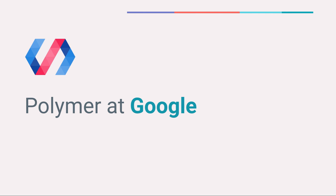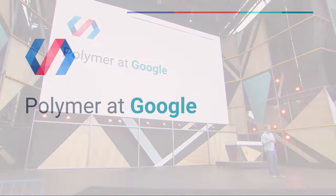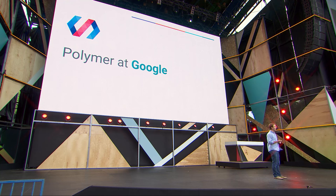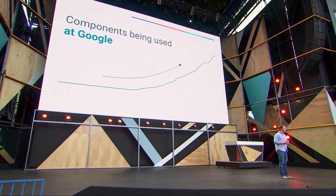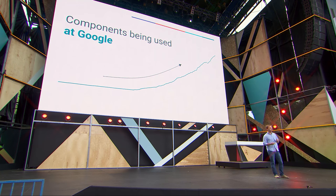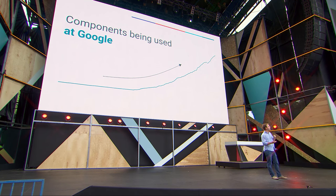Everything we do with Polymer, we build it open source first on GitHub out in the open, and then we pull the latest releases into Google's internal version control system so Google teams can use Polymer for their applications. Despite this hurdle, Polymer is one of the fastest-growing front-end technologies within Google. Over 400 Google projects today are using Polymer, with over 4,000 unique components built by Google teams.